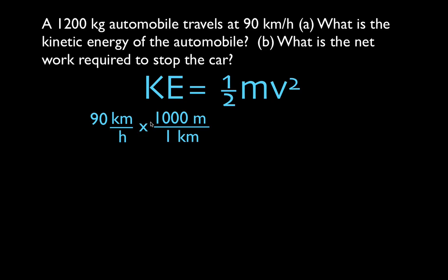But I don't want meters per hour. I want meters per second. So now I'm going to convert my hours. One hour is 3,600 seconds. So now I cancel this hour and that hour, and I get my answer: 25 meters per second is the same thing as 90 kilometers per hour. So now we have our velocity in meters per second and our mass in kilograms.